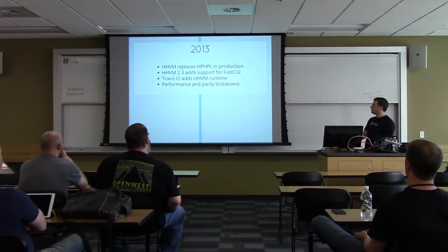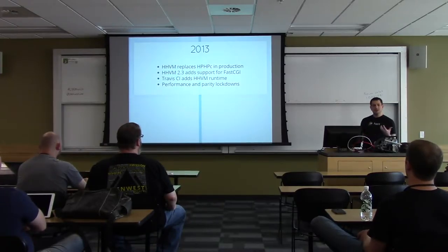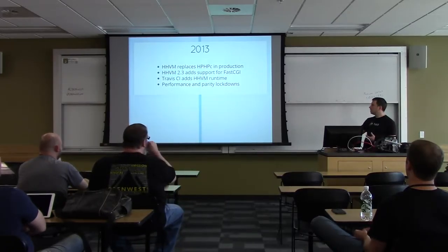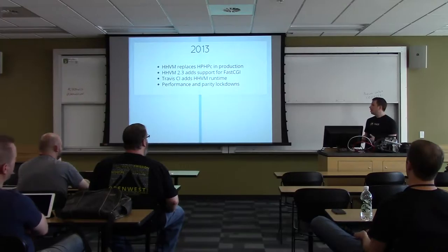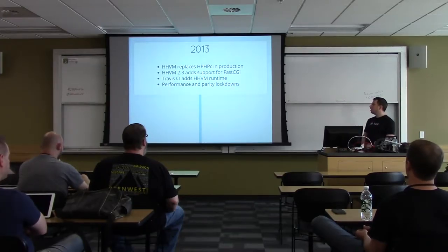In 2013, HHVM then officially replaced their compiler in production deployments. They added support — specifically because it was being open sourced and they wanted community adoption — for FastCGI, which is basically the same interface as PHP-FPM. We're currently at version 3.7; back then it was 2.3. There was also a movement to get popular open source PHP projects testing on Travis CI with HHVM, so they helped the Travis team add HHVM as a runtime so any project on Travis could run against HHVM as well.